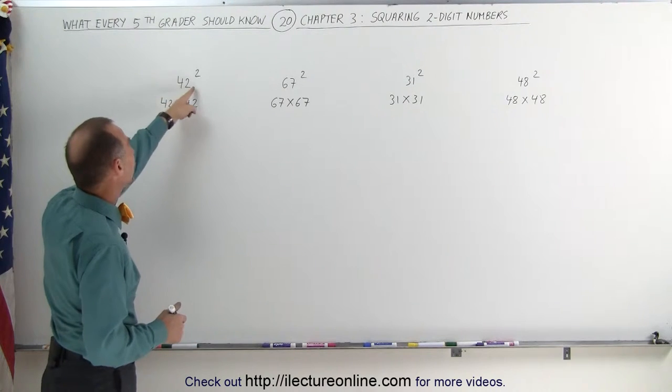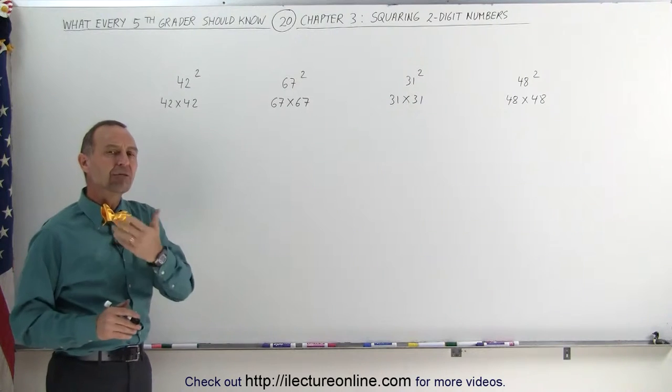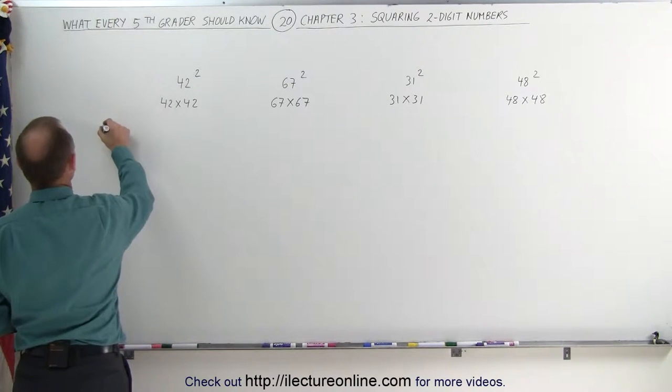For example, what's 42 squared? Well, you know that's 42 times 42. And how can you do that easily? Well, let's first do it the old-fashioned way. Let's simply multiply it out.